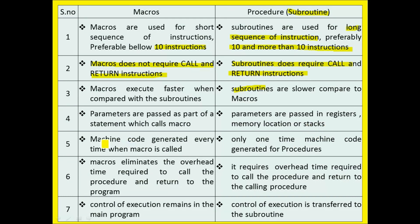Only one time the machine code will be generated for the procedures, that is subroutines. But for macros, the machine code is generated every time when the macro is called.